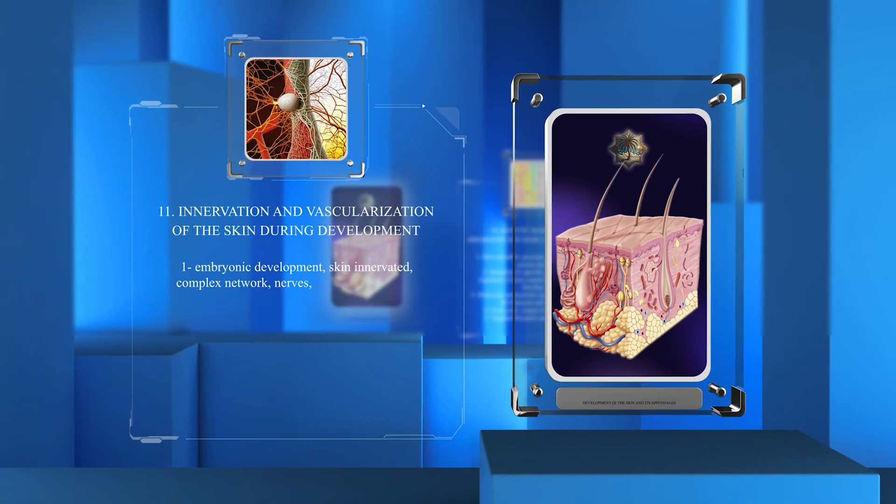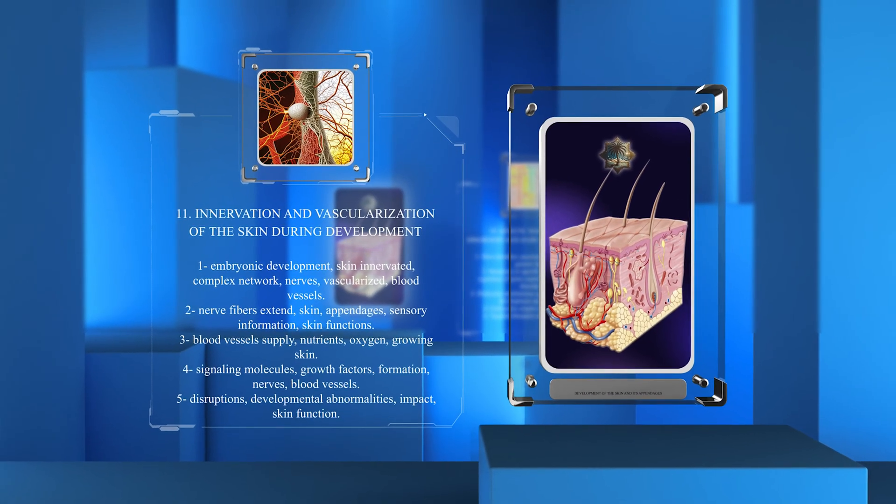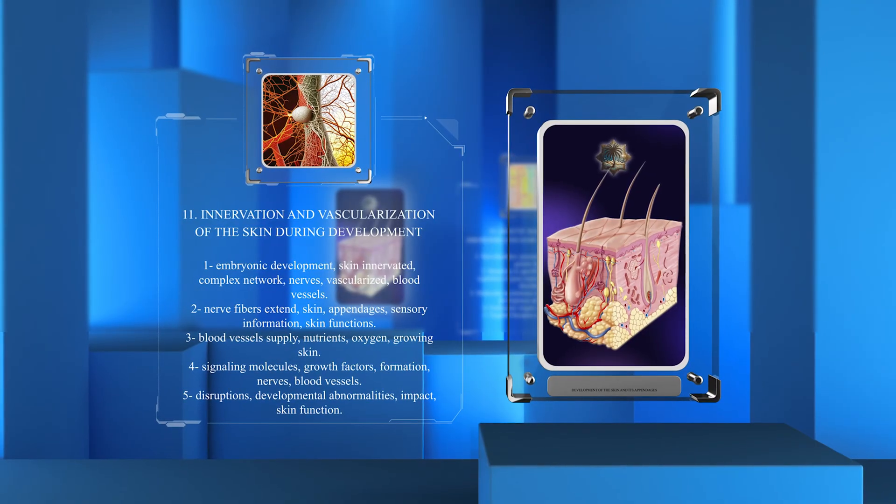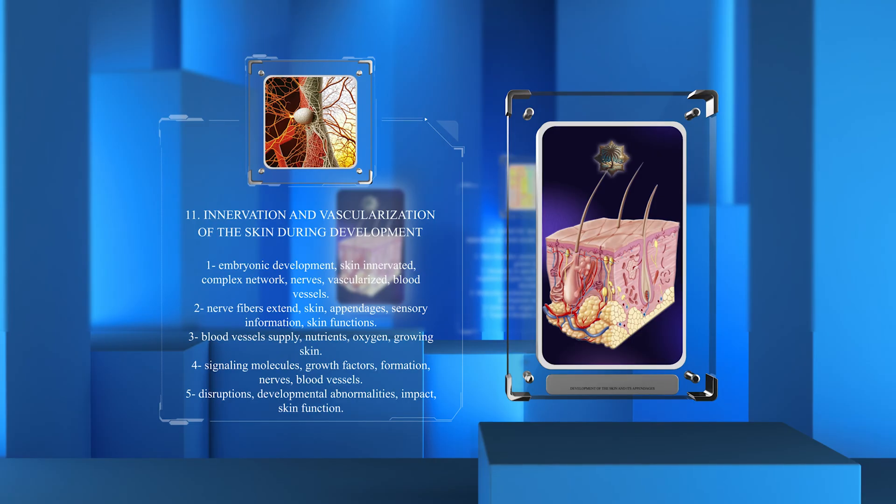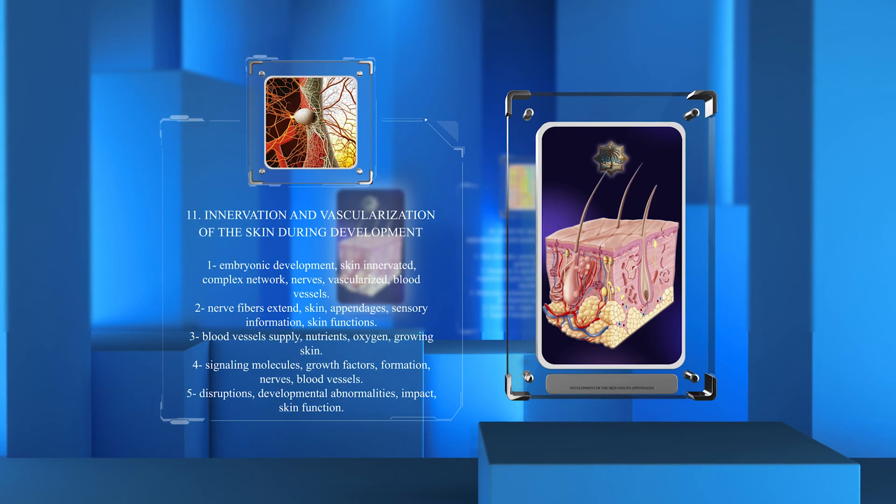In embryonic development, the skin is innervated by a complex network of nerves and vascularized by intricate blood vessels. Nerve fibers extend into the skin and its appendages, conveying sensory information and regulating skin functions.